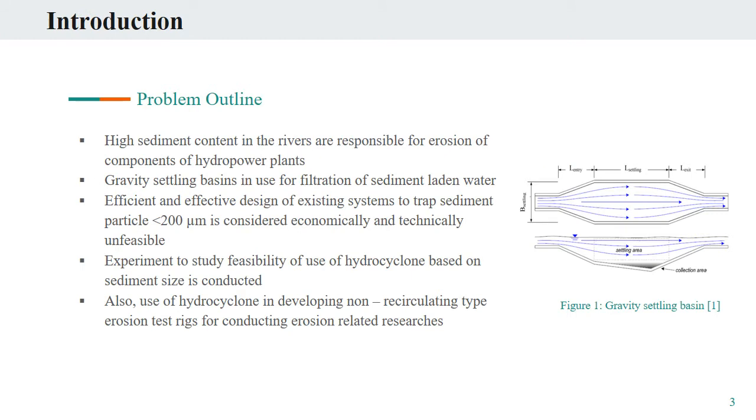We are well known about the fact that sediment erosion is the most prevailing problem in hydropower plants that run on sediment-laden rivers originating from the Himalayas, the Andes, and the Pacific Coast ranges. To prevent sediment from entering the turbine, commonly gravity settling basins with flushing arrangements are used as a filtration device. However, the results are not so promising as turbines and other components are severely eroded, mainly in the monsoon season when sediment concentration in the river is generally high.